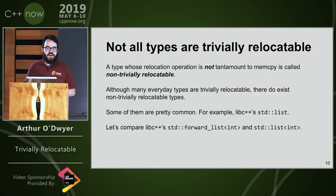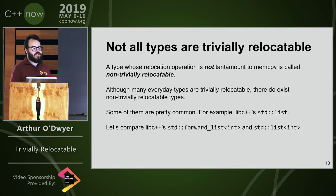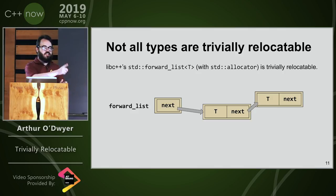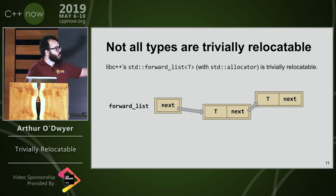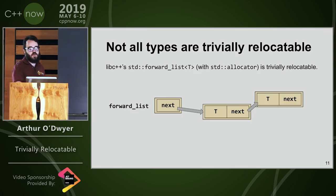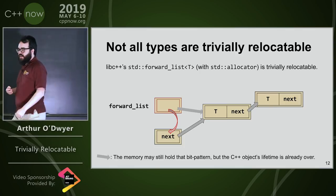Now, if the relocation operation is not tantamount to memcpy, we call that non-trivially relocatable. There do exist non-trivially relocatable types — std::list is an example. We have two types here: forward_list, the singly-linked list, and std::list, the doubly-linked list. One of them is trivially relocatable, the other isn't. Forward_list holds a next pointer to the first element; everything else is heap allocated. If I take the footprint of that forward_list and memcpy it somewhere else, it is still a valid forward_list in every sense. The memory at the old address still holds the bit pattern, but because relocation ends the object's lifetime and starts a new one somewhere else, we're never going to look at the old location again — it would be undefined behavior to do so.